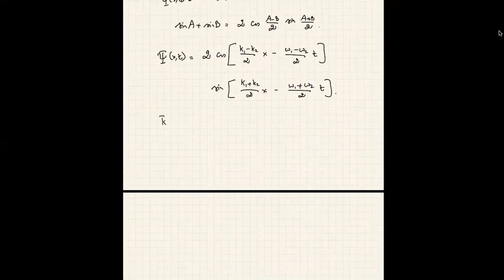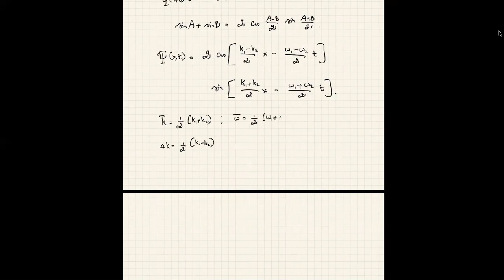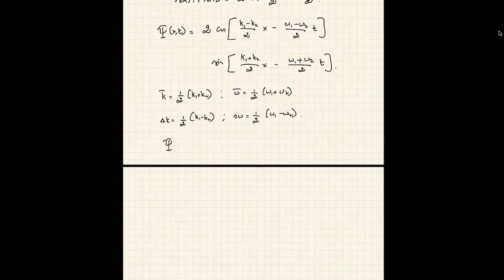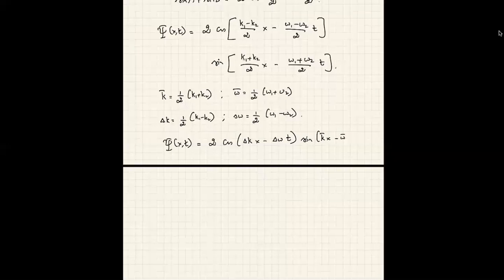Introducing shorthand: k̄ = ½(k₁+k₂), Δk = ½(k₁−k₂), ω̄ = ½(ω₁+ω₂), Δω = ½(ω₁−ω₂), the combined wave becomes: Ψ(x,t) = 2cos(Δk·x − Δω·t) · sin(k̄x − ω̄t). Now I make the assumption that the wave numbers being added are very close to each other — k₁ ≈ k₂ — so Δk is very small compared to either k₁ or k₂.